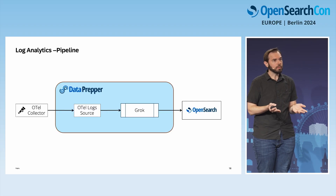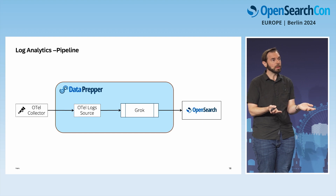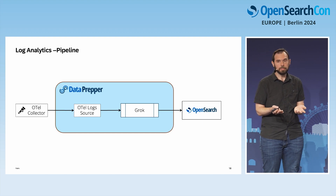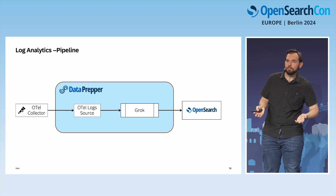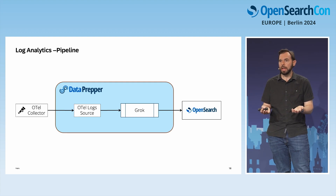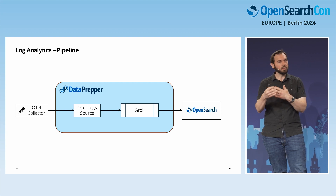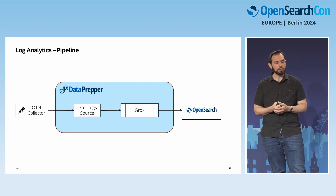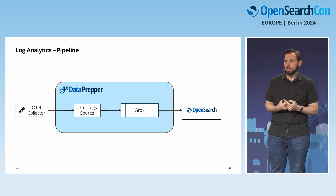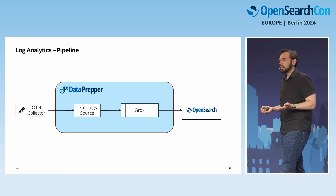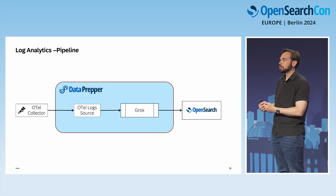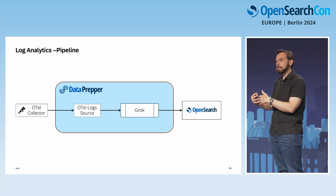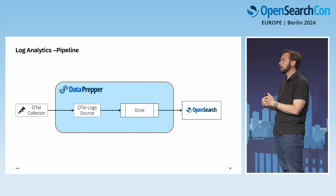For log analytics pipelines, you can make a simple pipeline with an OTEL Collector and OpenSearch. But many people have known patterns within the message part of the OTEL log event. We've seen people use processors such as the Grok processor to look for known patterns and enrich the data going into OpenSearch. Some customers use Grok within Grok or multiple patterns because they have logs from all sorts of different applications.